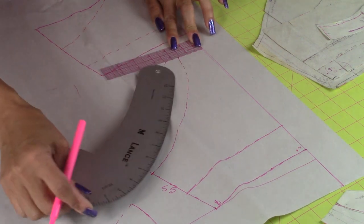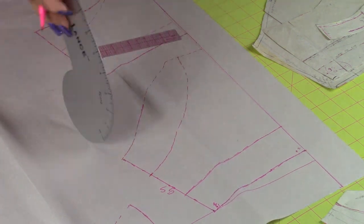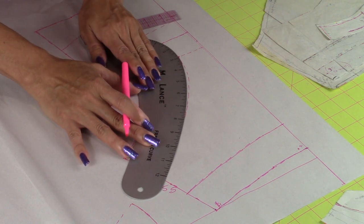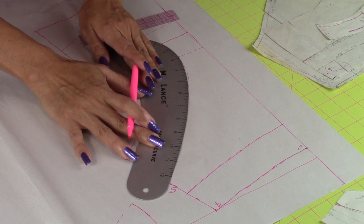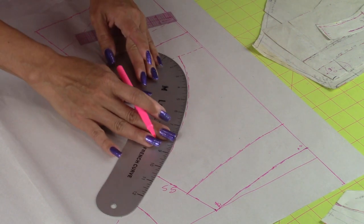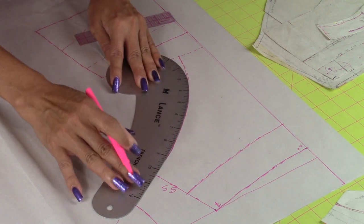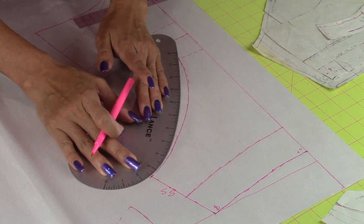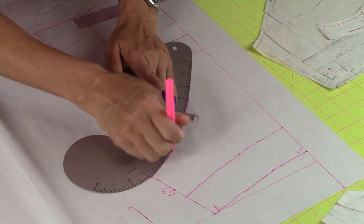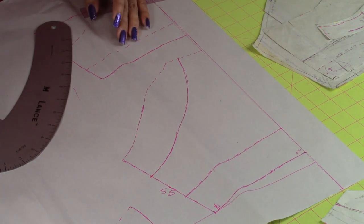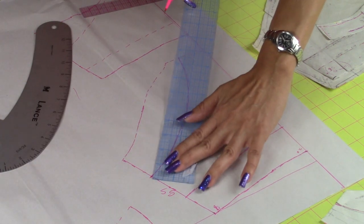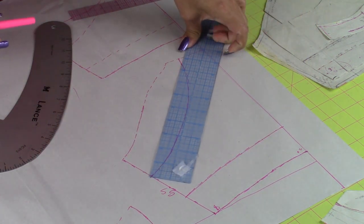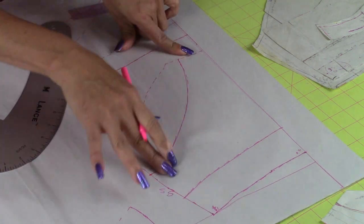So then you just grab your ruler and go like this. You find the way you can make a curve or you could just make it a straight line. Like if you made a straight line, it would be like this. And then you mark it straight. So now we have our back.